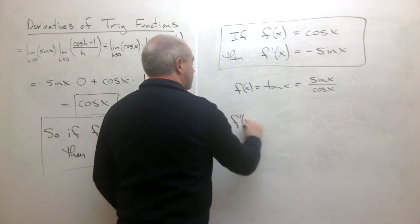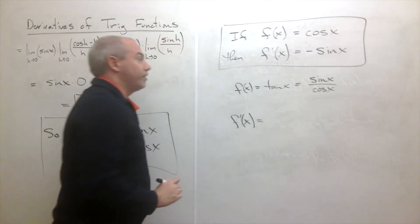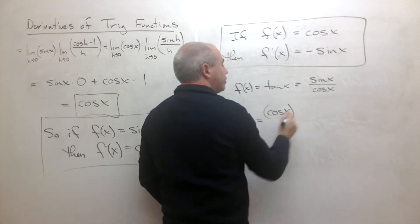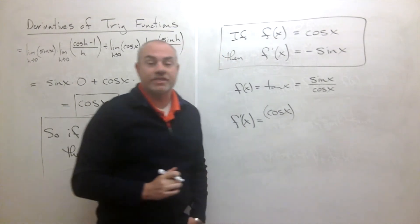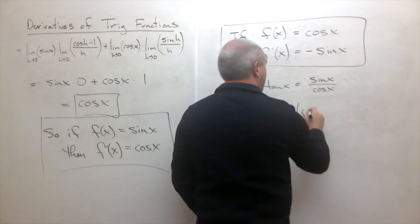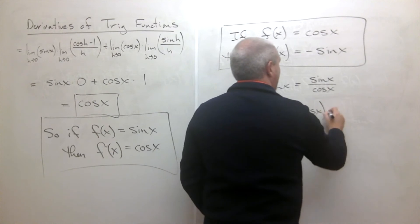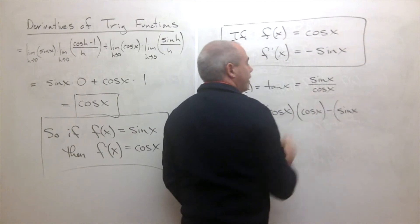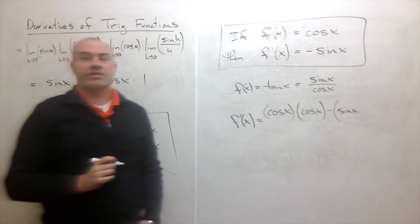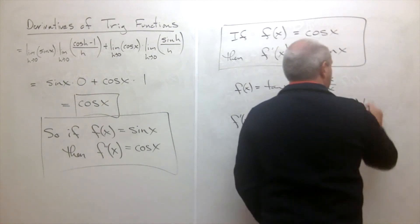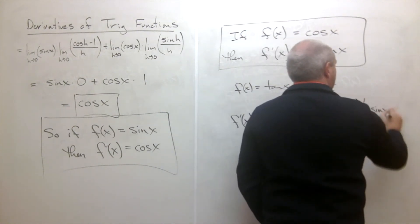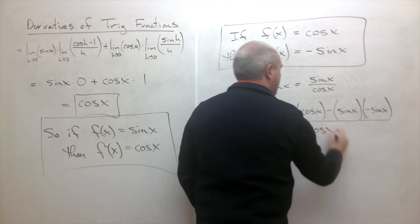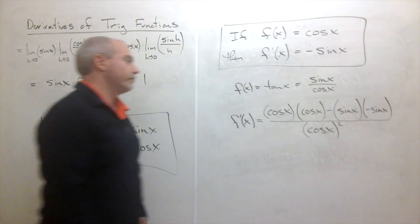Using the quotient rule, f prime of x is the bottom, cosine of x, times the derivative of the top — the derivative of sine of x is cosine of x — minus the top, sine of x, times the derivative of the bottom — the derivative of cosine of x is negative sine of x — all over the bottom, cosine of x, quantity squared.